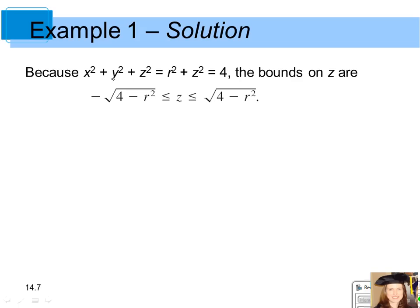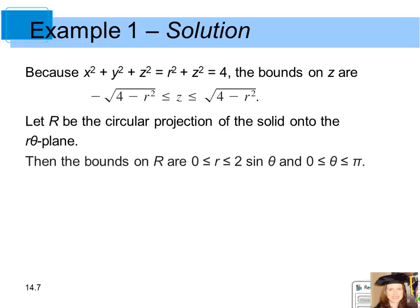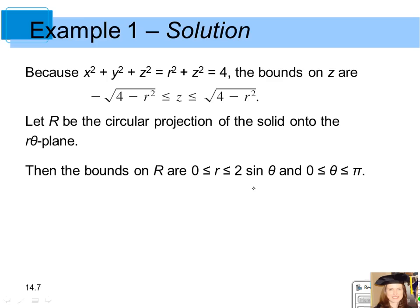Using the conversion equations, replace x squared plus y squared in the sphere equation with r squared, giving r squared plus z squared equals 4. Solving for z, the bottom of the solid region is the negative square root of 4 minus r squared and the top is the positive square root. The projection onto the xy-plane gives bounds for r from 0 to 2 sine theta, and bounds for theta from 0 to pi.